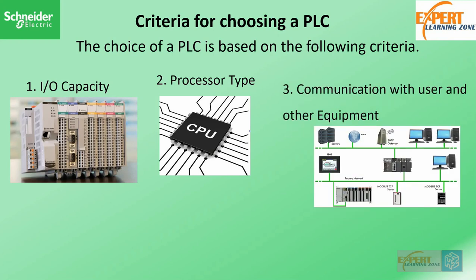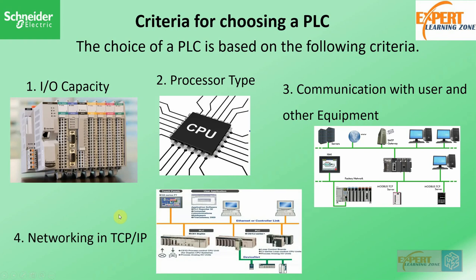The third criteria is communication with other equipment. Based on the PLC's capacity to communicate with HMIs, other PLCs, SCADA systems, and feedback control systems, you want to choose a PLC with the right features for your application. The fourth criteria is networking capability, particularly TCP/IP networking. Without it, it becomes very difficult to integrate an application into an already existing system, so you will want to choose a PLC based on its networking capability.